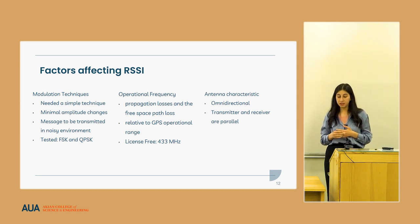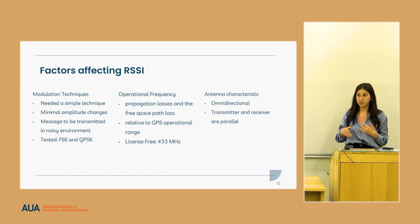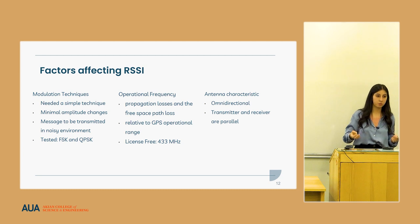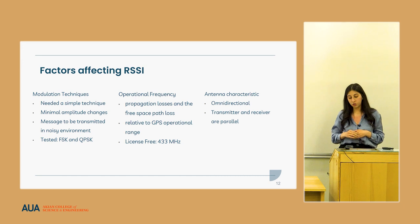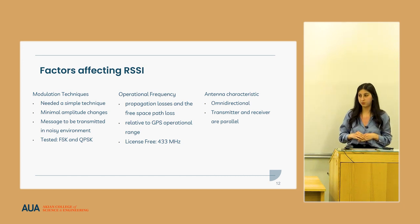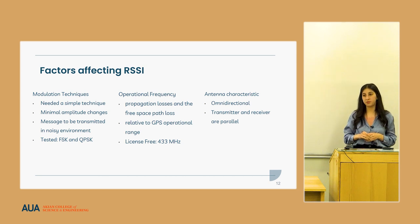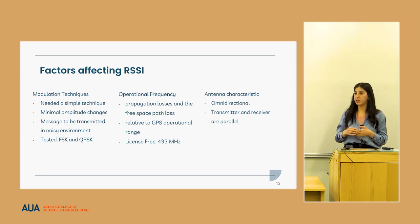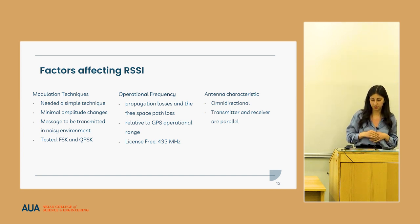Operational frequency was another key choice to minimize propagation losses and free-space path loss. Since we wanted to operate where GPS is denied, we chose lower frequencies so we are not in the same frequency band as GPS when it is jammed. The industrial, scientific and medical bands for license-free operation include 433 MHz and 826 MHz. As we wanted lower frequencies, we chose 433 MHz.